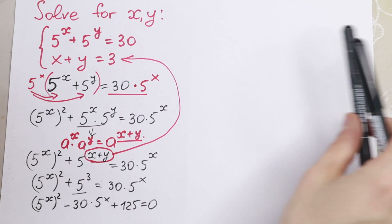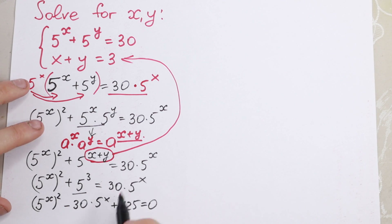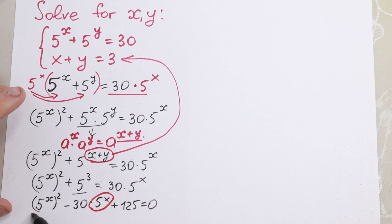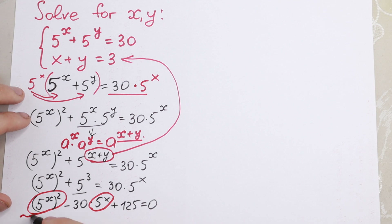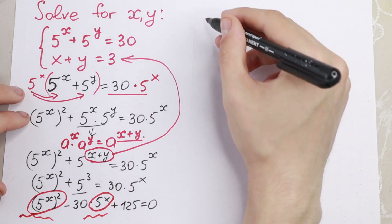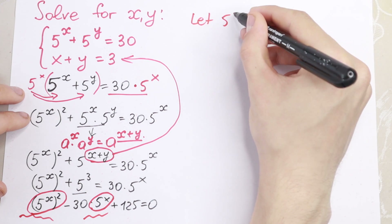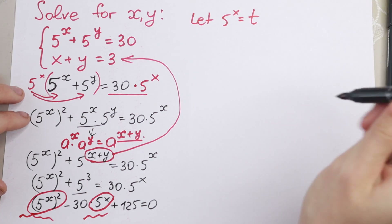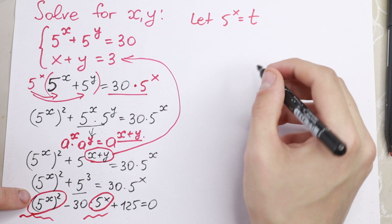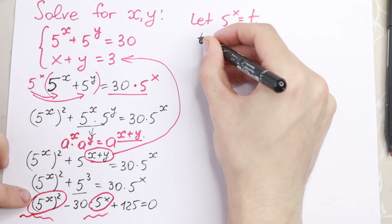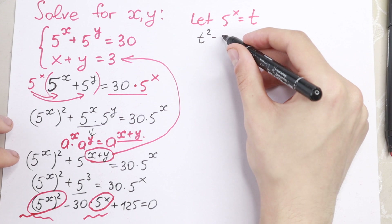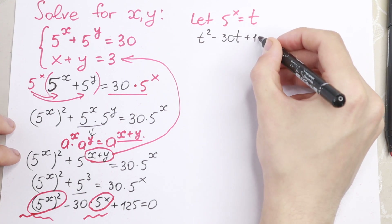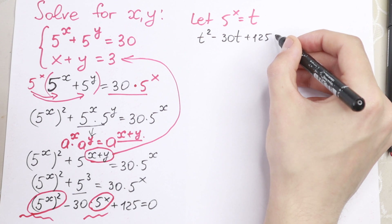And why do I write this in that order? Because right now we can see that we have 5 to the power x in the first power, and 5 to the power x to the second power. These two elements are the same, so we can use a substitution. Let 5 to the power x equal to t. Right here we have not t but t squared. So t squared minus 30t plus 125 equal to 0.